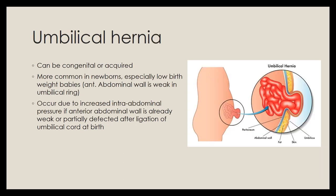Umbilical hernias can be either congenital or acquired. They are more common in newborns, especially low birth weight babies, where the anterior abdominal wall is weak in the umbilical ring. They occur due to increased intra-abdominal pressure when the anterior abdominal wall is already weak, or due to partial deficiency after ligation of the umbilical cord at birth. In this picture, a hernia in the umbilical region shows peritoneum with coils of intestine and fat protruding through.